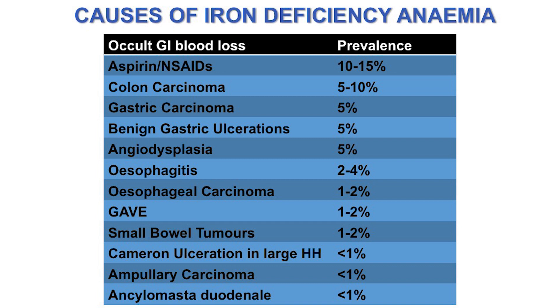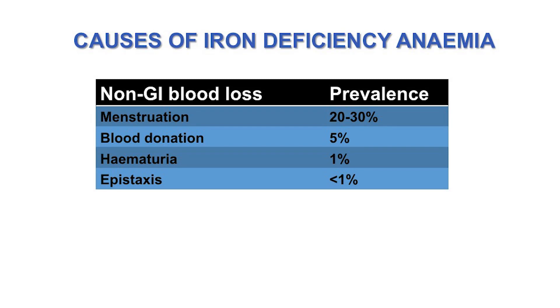Blood loss from the GI tract is the most common cause of iron deficiency anemia. The most important conditions to recognise are gastric cancer and colorectal cancer. Other causes include gastric ulcers, non-steroidal anti-inflammatories, angiodysplasia, small bowel tumours, Cameron's ulcers, and large hiatus hernias. Additional causes include regular blood donation, haematuria, and epistaxis — problems outside the GI tract.